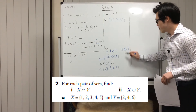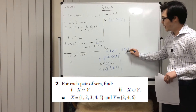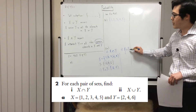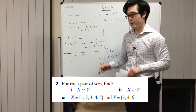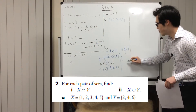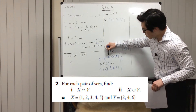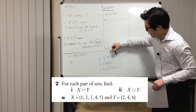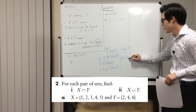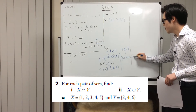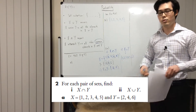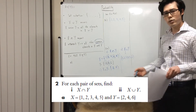For part (ii), X union Y means write all the numbers in X or Y. So write them all out: 1, 2, 3, 4, 5, and 6 — those are the numbers you write inside the bracket. Just write each number once; you don't write any number twice.